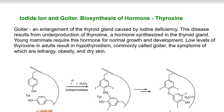You can see here TYR, tyrosine. Which group is present here, and this is the attachment. Now, iodide and hydrogen peroxide react with the enzyme iodoperoxidase. Here, the iodide ion and hydrogen peroxide react via the enzyme iodoperoxidase.